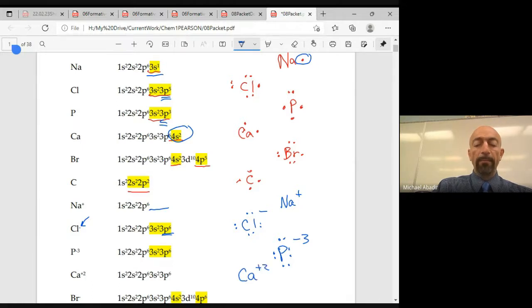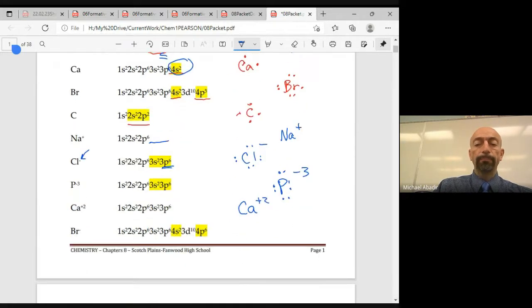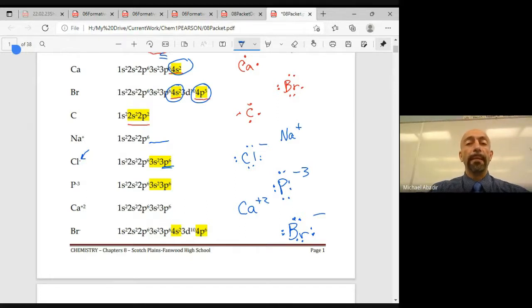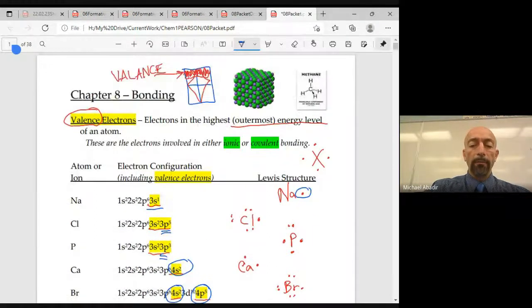Last but not least, if we look at the Br, remember that ended in 4s2 and 4p5, and that wants to gain one more electron. So that's going to be a Br with eight valence electrons altogether, and you're going to put a minus one. So that's how you would draw the Lewis structures for each of these atoms and ions, and the number of dots represents the number of valence electrons that you would have.